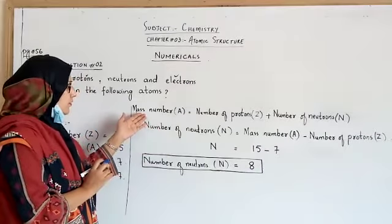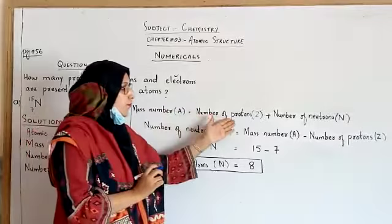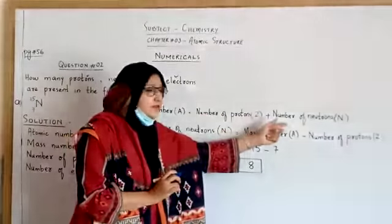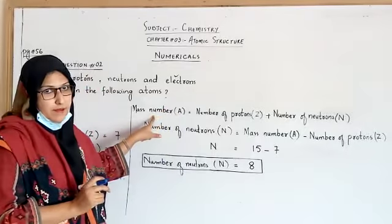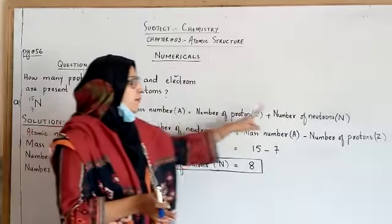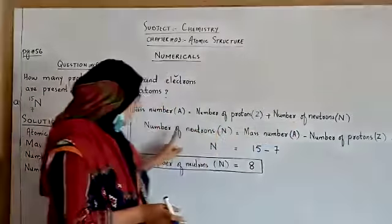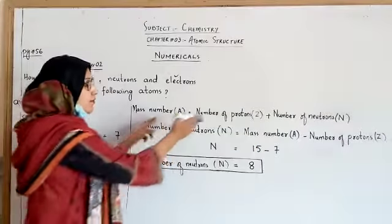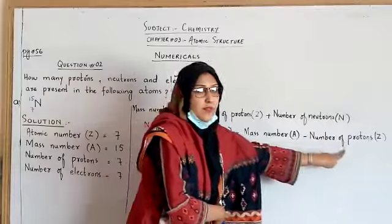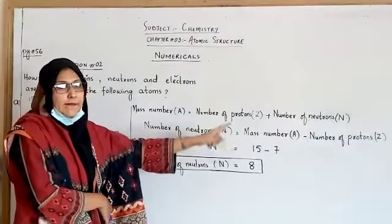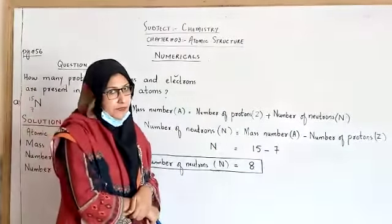The formula is: mass number A equals number of protons Z plus number of neutrons N. That is the basic formula of mass number. To find the number of neutrons, rearrange this formula: number of neutrons equals mass number minus number of protons. N equals A minus Z.